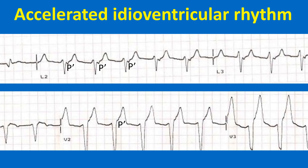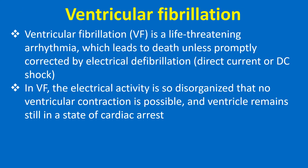ECG strips show accelerated idioventricular rhythm. Regular retrograde P waves are seen in the upper tracing. In the lower tracing, retrograde P waves manifest as a slight irregularity in the upsloping ST segment.